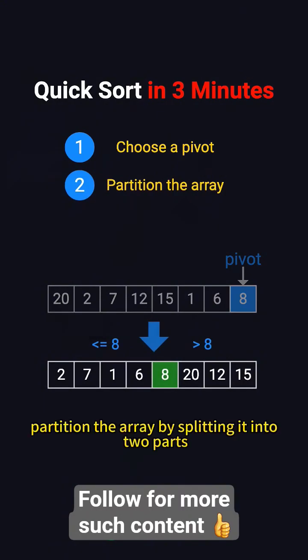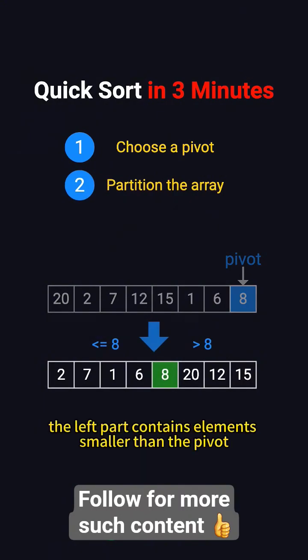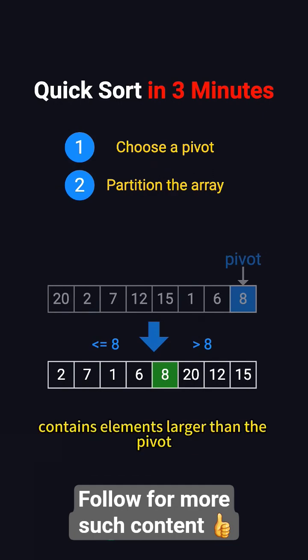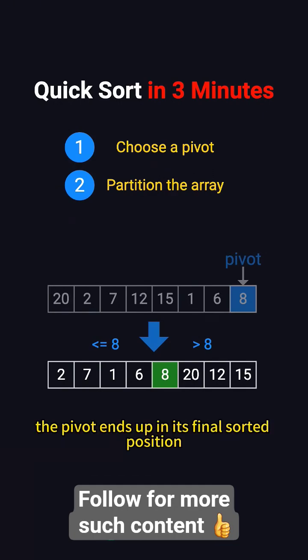Second, partition the array by splitting it into two parts. The left part contains elements smaller than the pivot, and the right part contains elements larger than the pivot. The pivot ends up in its final sorted position.